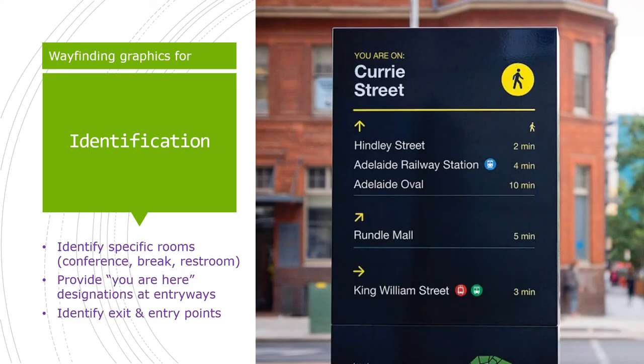Graphics for identification: identification signs let your reader know where they are, pointing out specific structures or landmarks that help them gain their bearings. These signs aren't intended to offer directions, but they can contribute to recognition by reminding visitors of your company name and logo. Identification signs can identify a specific room like a conference room, break room, or bathroom; provide 'you are here' designations on maps and entryways; or identify exit signs and entry points. An example is an identifying sign on a corner of a city street.